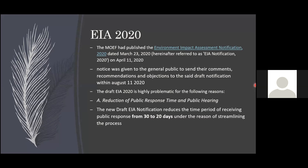First problematic area is public response time. Previously all EIA proposals were open to public response for 30 days, but the new draft reduces this to 20 days. The government says it is for streamlining the process, but even reducing 10 days means fewer objections are received for proposed companies, giving industries more time to set up but less time for them to answer objections. That is a very problematic area.